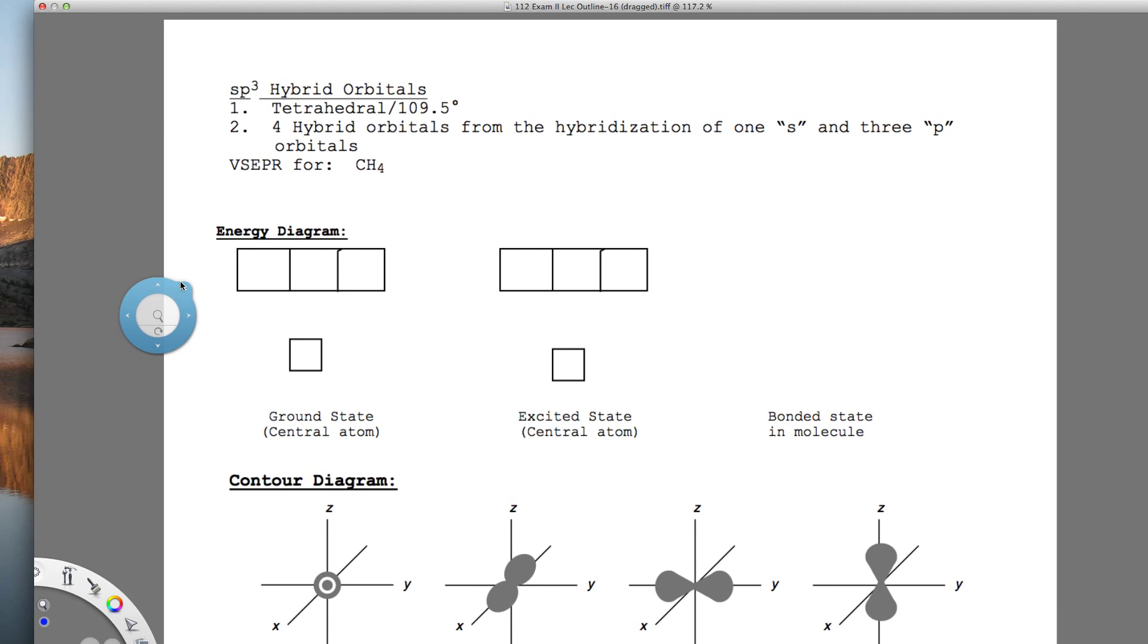We're going to draw methane and I'm simply going to draw the box diagram in this video or energy diagram, and in another video I'll draw the contour diagram. You remember that carbon has four valence electrons, so I'm just going to draw the 2s and the 2p. I'm not going to show the 1s, we're just going to look at the electrons that potentially might bond.